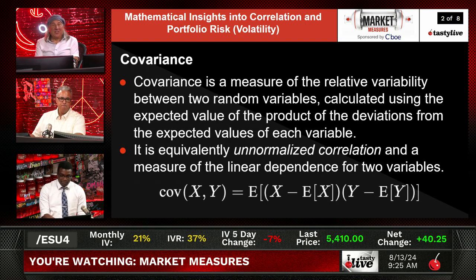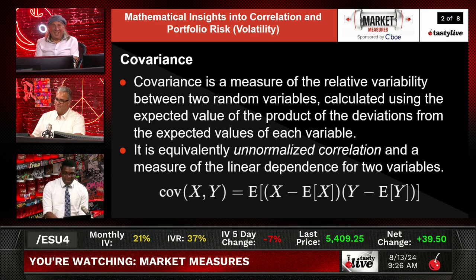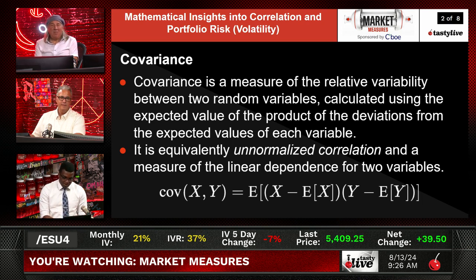Covariance is a measure of the relative variability between two random variables. It is calculated using the expected value of the product of the deviations from the expected values of each variable. It is equivalently a normalized correlation and a measure of linear dependence for two variables.